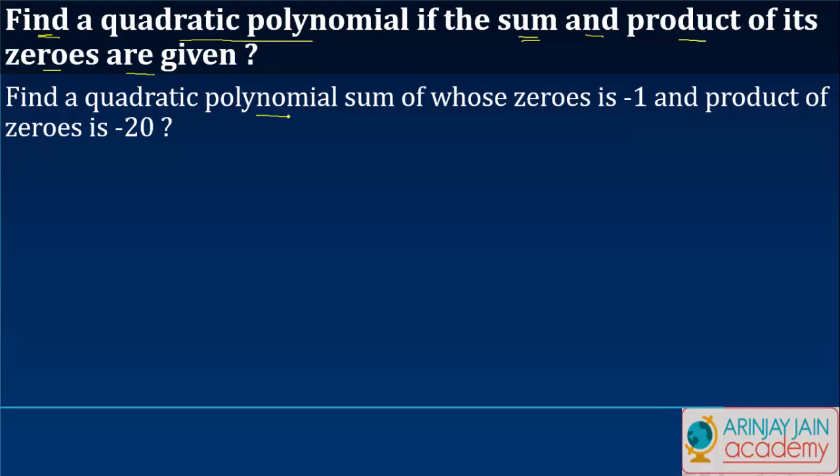Find a quadratic polynomial sum of whose zeros is minus 1 and the product of the zeros is minus 20.